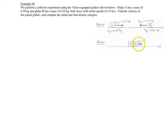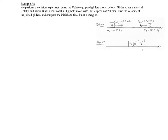To find this final velocity, we need to assume there are no external forces acting on the system, like friction. We're looking at just before the collision and just after the collision, so the net force on the entire system is zero, and we can assume the momentum of the system is conserved. We start by stating the conservation of momentum.